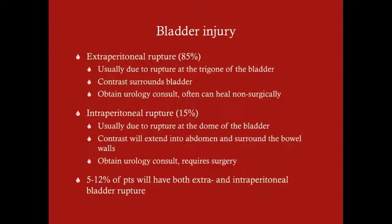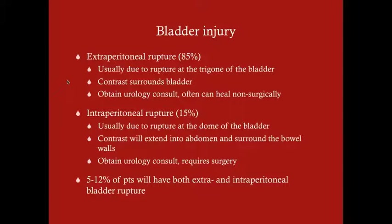There are different ways the bladder can rupture. Most of the time it's extraperitoneal, usually due to rupture at the trigone, which is the weakest portion of the bladder. On a cystogram you'll see contrast surrounding the bladder - it stays outside the peritoneum. In this case you obtain a urology consult; this can often heal non-surgically, though the patient will need to be in the hospital usually for about two weeks.